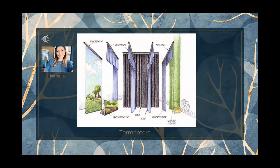Tormentors, or torms, are vertical masking drapes that hang on either side of the teaser. In a traditional theater, the pair of tormentors should be mounted just upstage of the grand drape and on the same plane as the teaser. Various mounting methods can be used, but typically it is attached to a pipe which is then mounted to a traveler track. This track allows the torms to be drawn on stage to reduce the proscenium opening and fit the current scene.